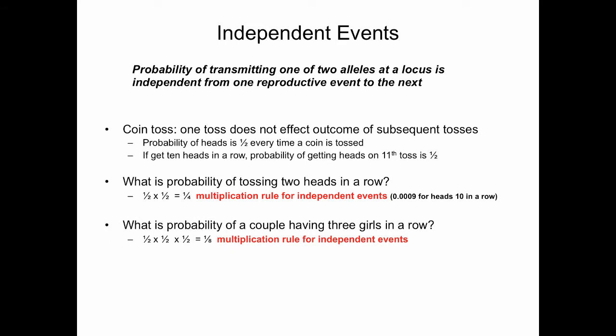What's the probability of a couple having three girls in a row? Again, it's the multiplication rule for independent events because every pregnancy is an independent event. The probability of having three girls in a row is one-half times one-half times one-half, or one-eighth. If you ask instead what is the probability of having three children all of the same sex, the probability would be one-fourth — the probability of three girls plus the probability of three boys.